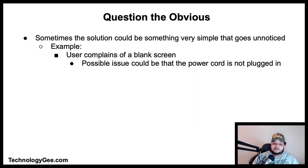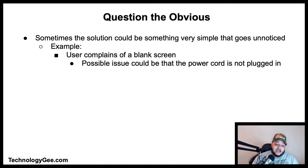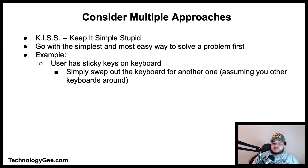You arrive to investigate and notice the power lights on the monitor are not on. You look behind the monitor and see the power cord is plugged in, then follow the cord to the wall outlet and discover it is not plugged in. You inform the user, and they recall accidentally kicking something under the desk — more than likely the power cord. You plug it back in and secure it with zip ties to prevent the same issue in the future. Problem solved.